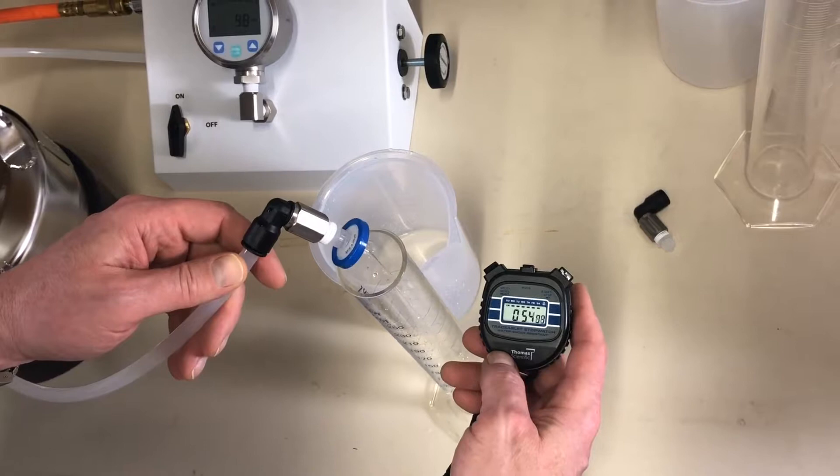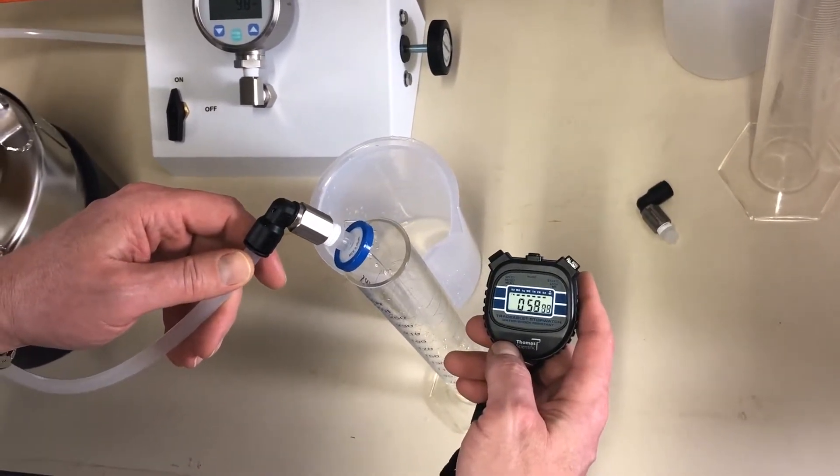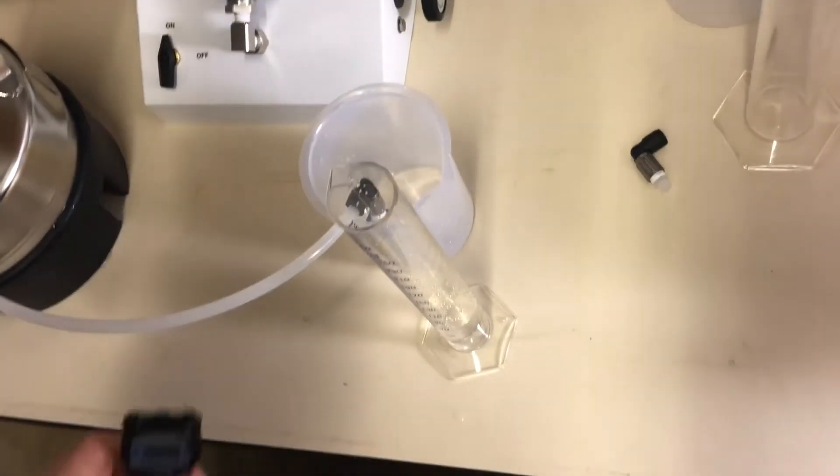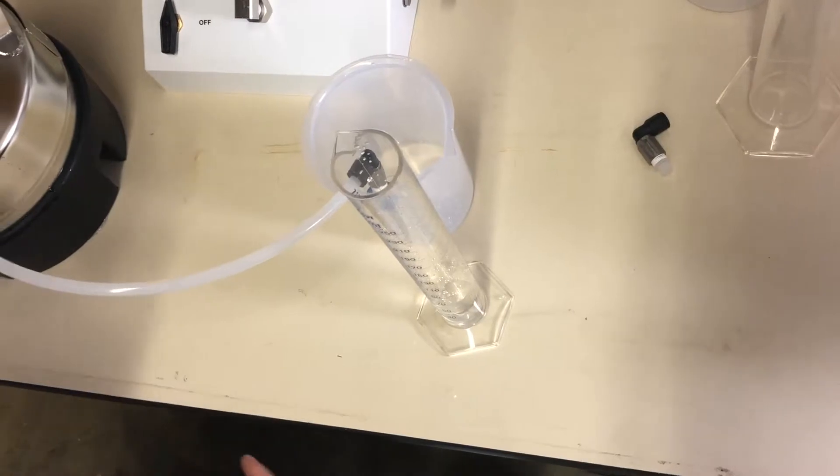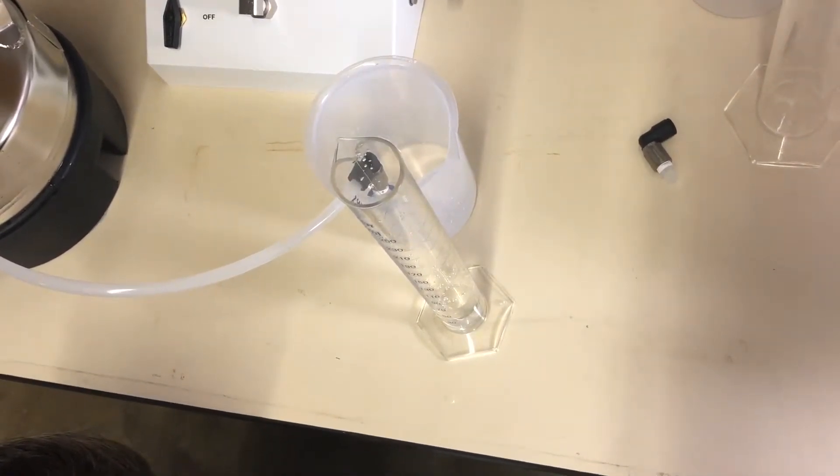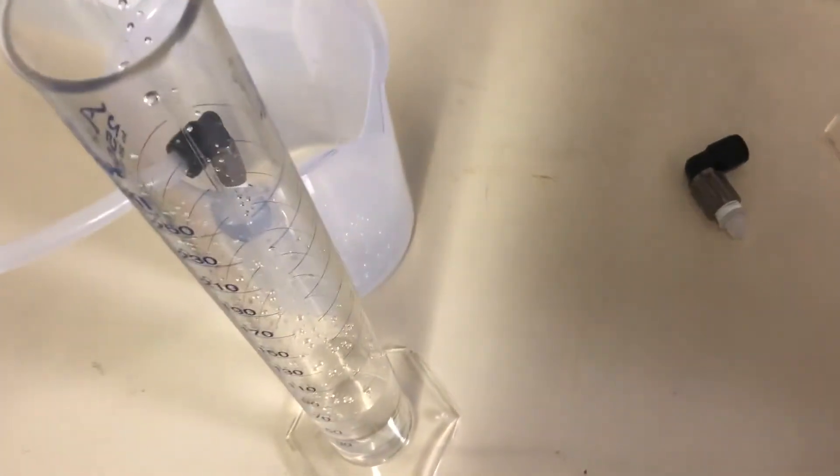So at the end of exactly one minute, we'll remove the filter back to the beaker. And then we'll measure the amount of water collected for one minute, which was 68.